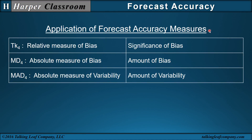Let's see the application of the forecast accuracy measures in practice. The tracking signal describes the significance of the bias, the mean deviation describes the amount of bias, and the MAD describes the amount of variability. The amount of variability often indicates the level of risk in your forecast — if your forecast had large variability around your time series, that same variability would be expected in the future. The mean deviation is the amount of bias, and the tracking signal is the significance of that bias.